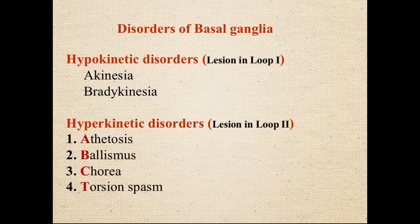Torsion spasm involves turning the head to one side and being unable to bring it back to center — there is a spasmodic torsional movement. All these hyperkinetic movements — athetosis, chorea, ballismus, torsion spasm — are due to lesions within the indirect pathway causing exaggerated movement. Each will be covered in more detail when discussing the diseases in which they occur.